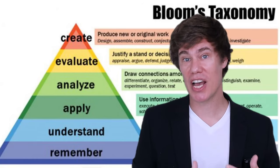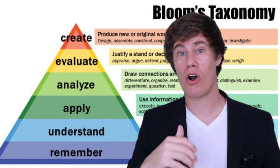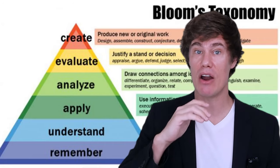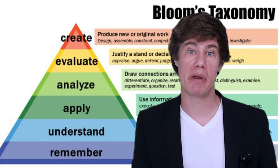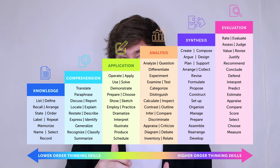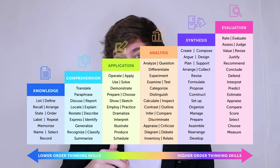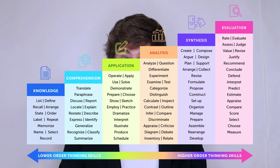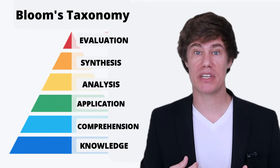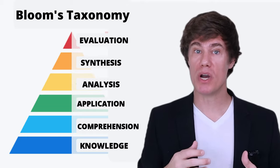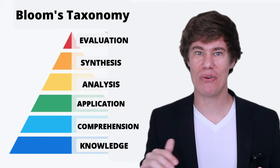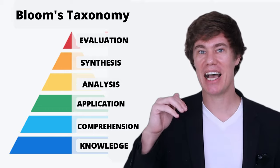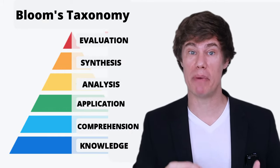Bloom's Taxonomy is based on the idea that cognitive processes can be arranged into six levels with increasing complexity. If a student is capable of performing at a higher level, it means that he is able to perform at all other preceding levels. The cognitive and affective taxonomy were divided into categories, with the first representing the lowest and the last representing the highest level of mastery.